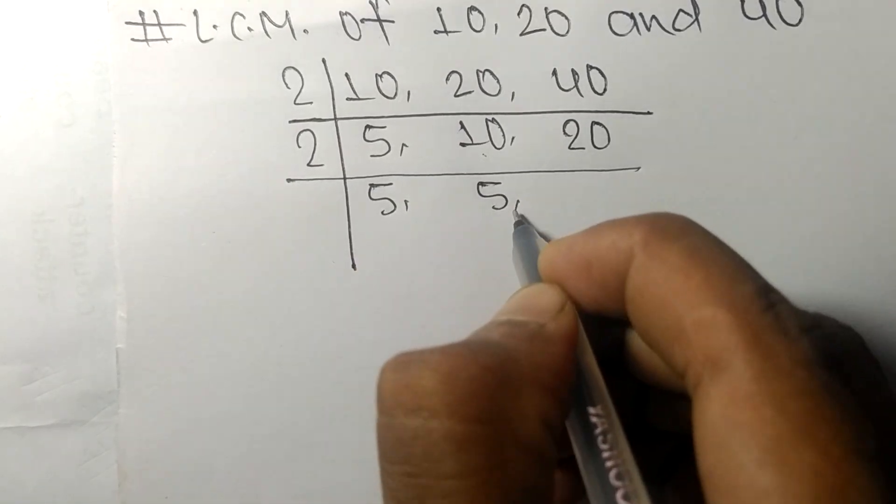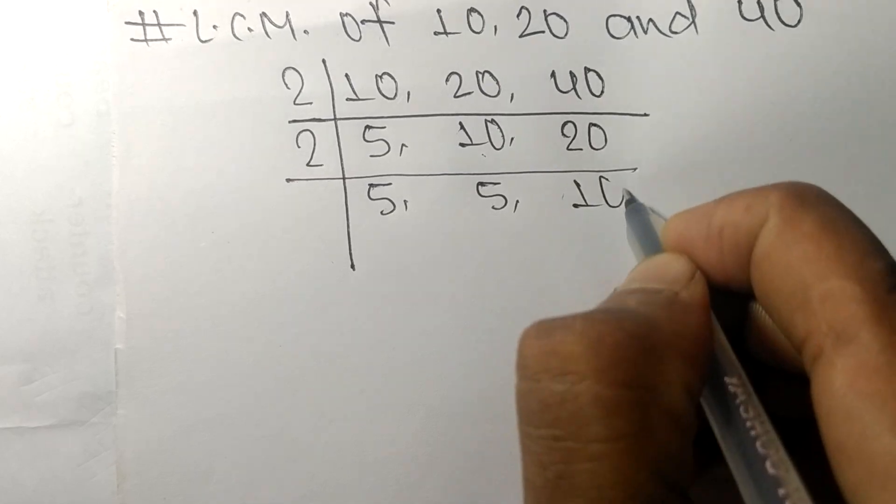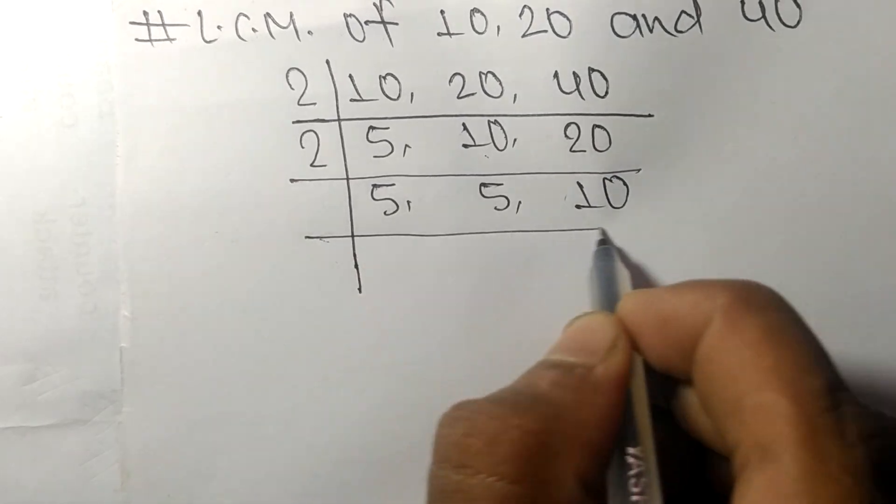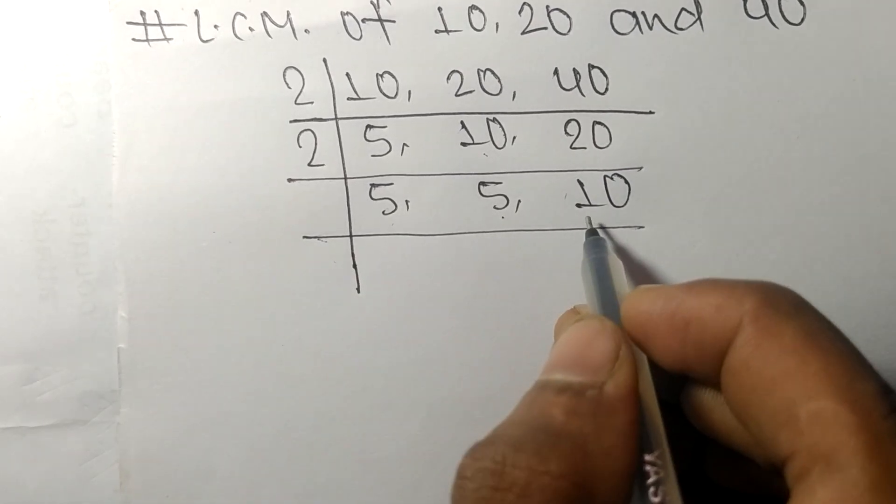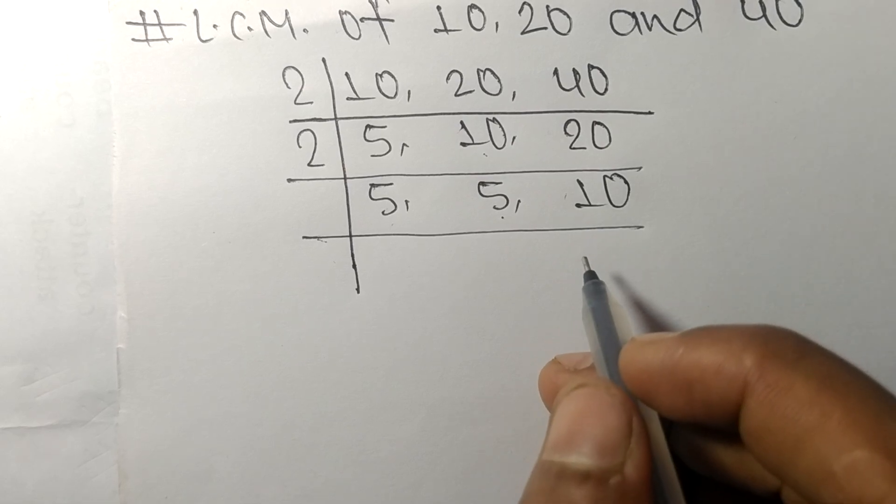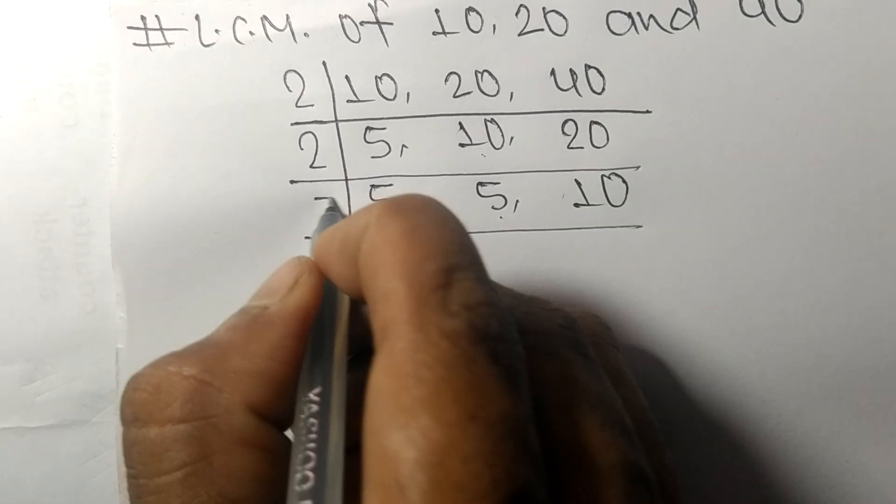2 times 5 means 10, 2 times 10 means 20. So now we got 5, 5, and 10, which are exactly divisible by 5.